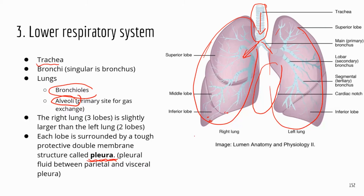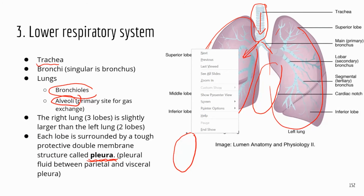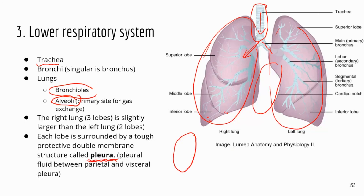The pleura has two layers with a very small space between them called the pleural space. The pleural space contains a fluid called pleural fluid. The pleural fluid provides lubrication so that when the lungs deflate and inflate and move around, the pleural fluid reduces the friction.